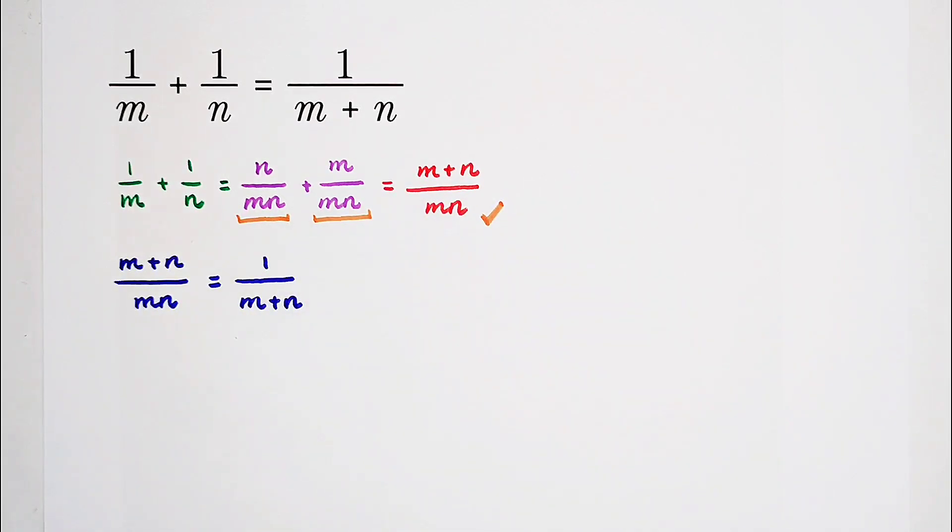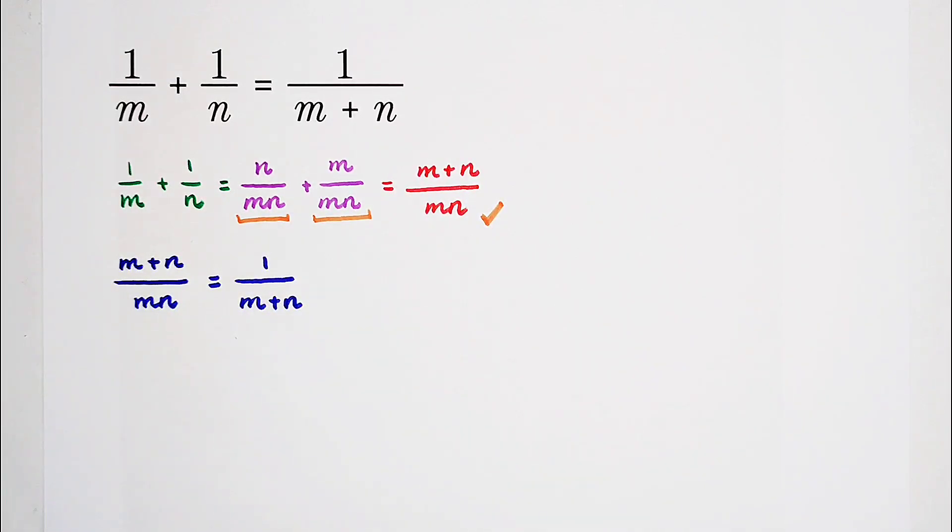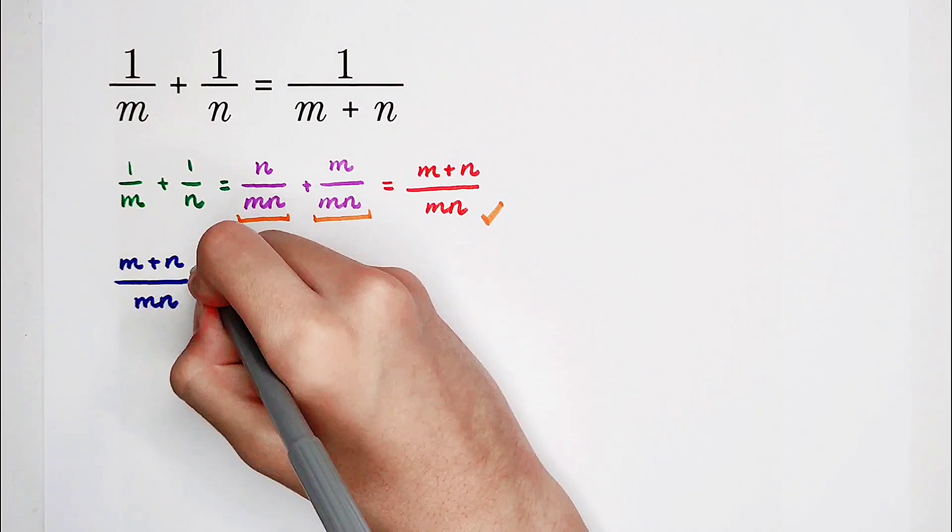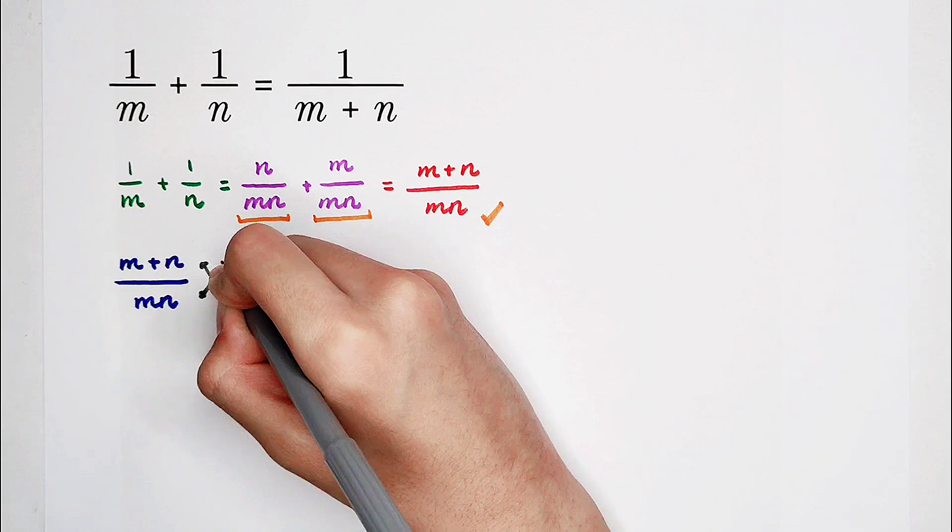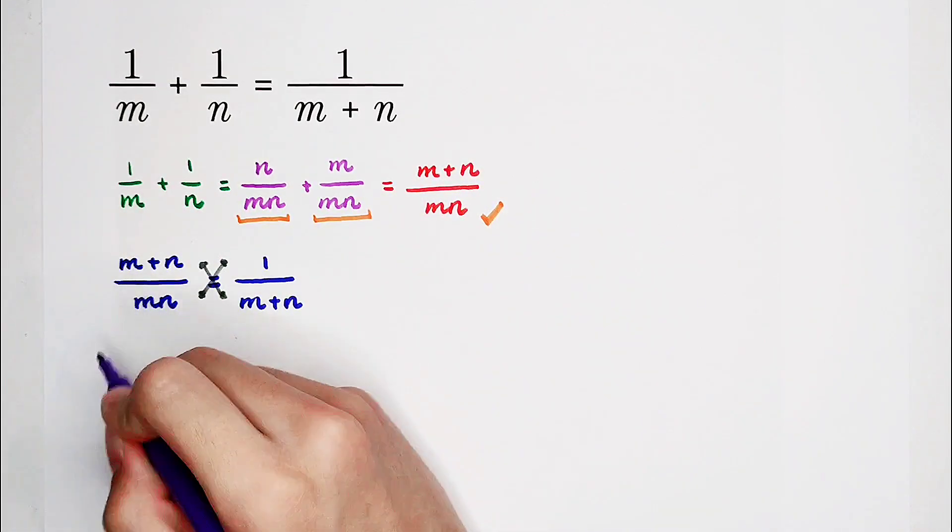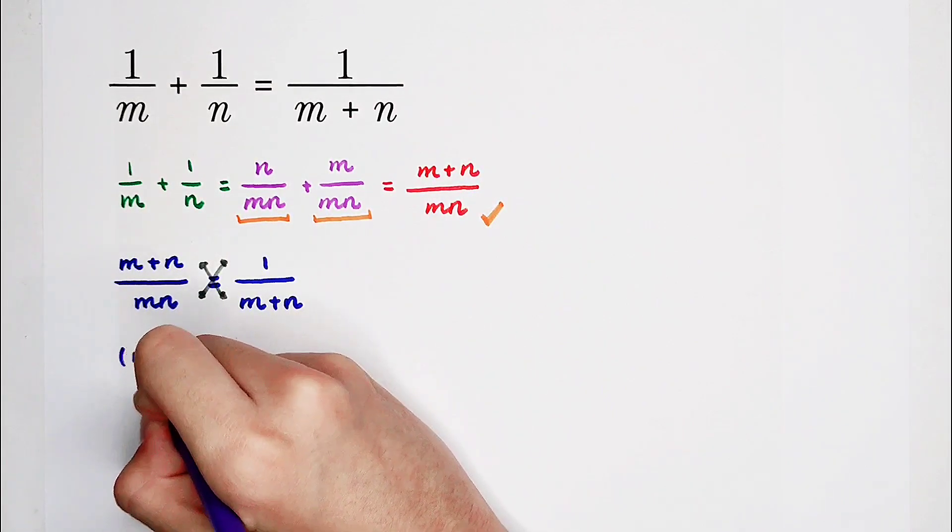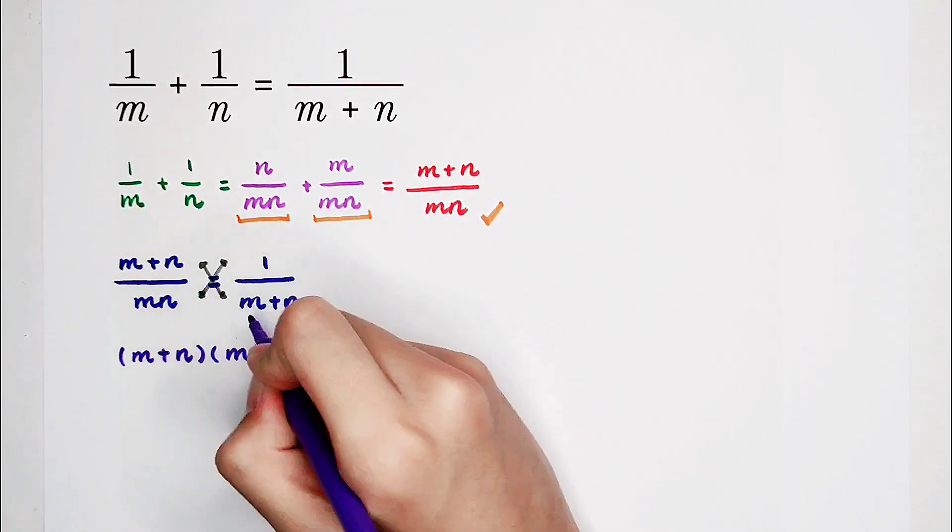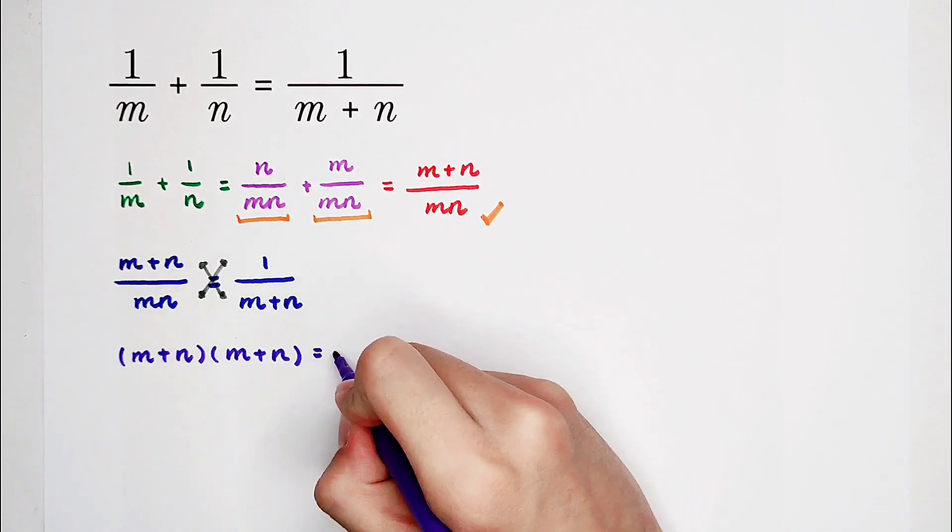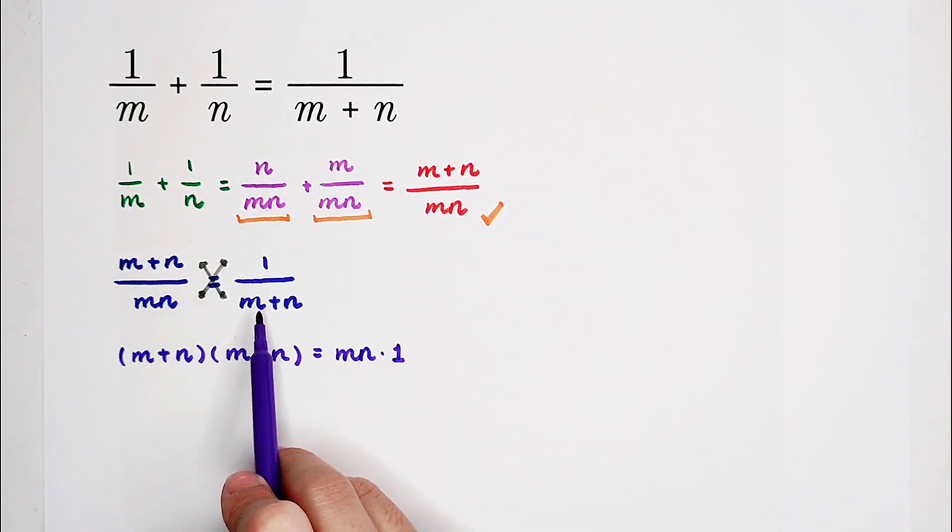So what should we do? Which method should we use? Of course, everybody knows that: the cross multiplying. From here to here, the left-hand side is m plus n times m plus n is equal to mn, the right-hand side, times 1. This times this is equal to this times this, the cross multiplying rule.